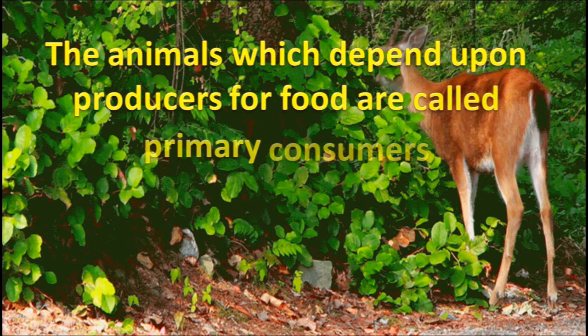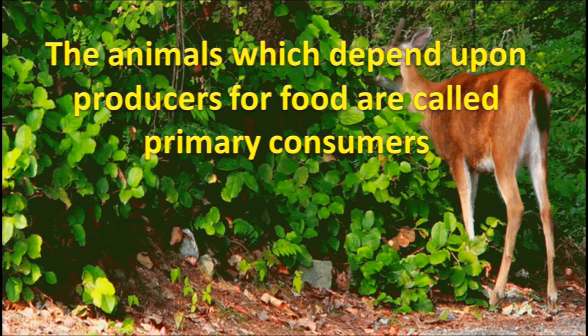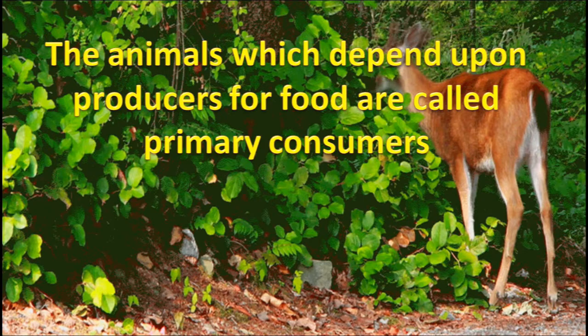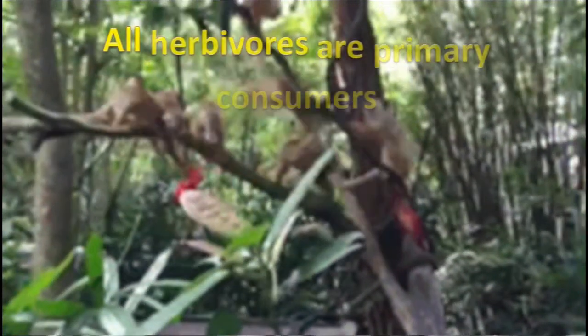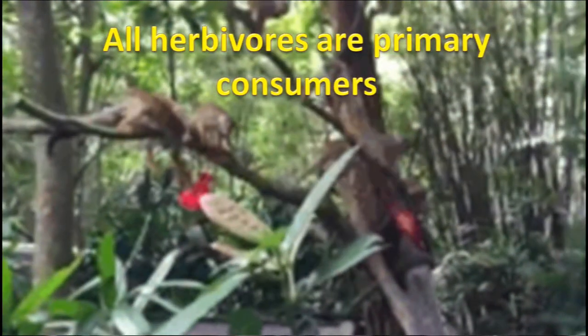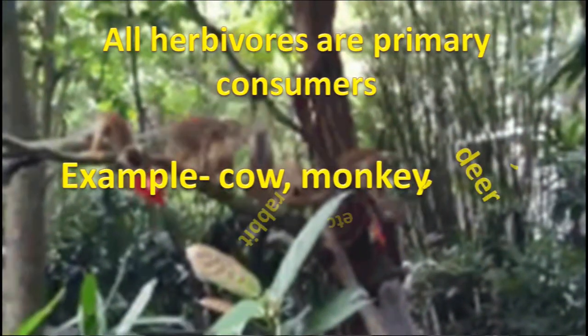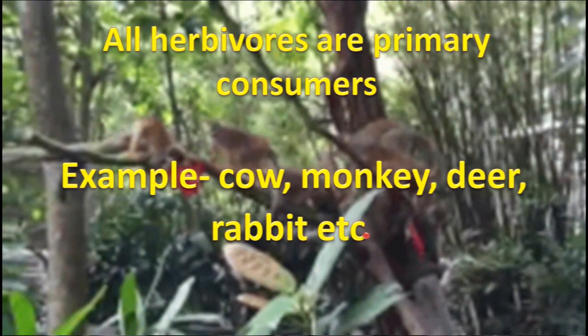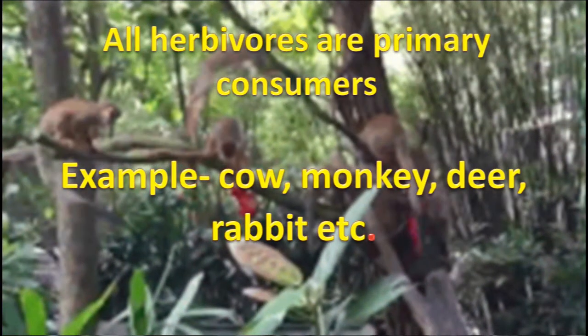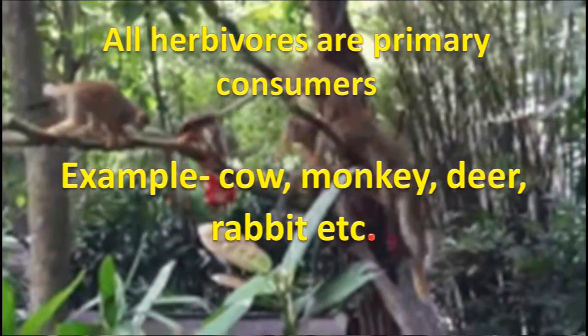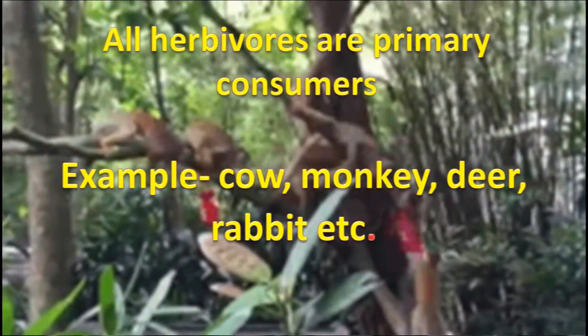The animals which depend upon producers for food are called primary consumers. All herbivores are primary consumers. For example, cow, monkey, deer, and rabbit — all plant-eating animals are primary consumers.